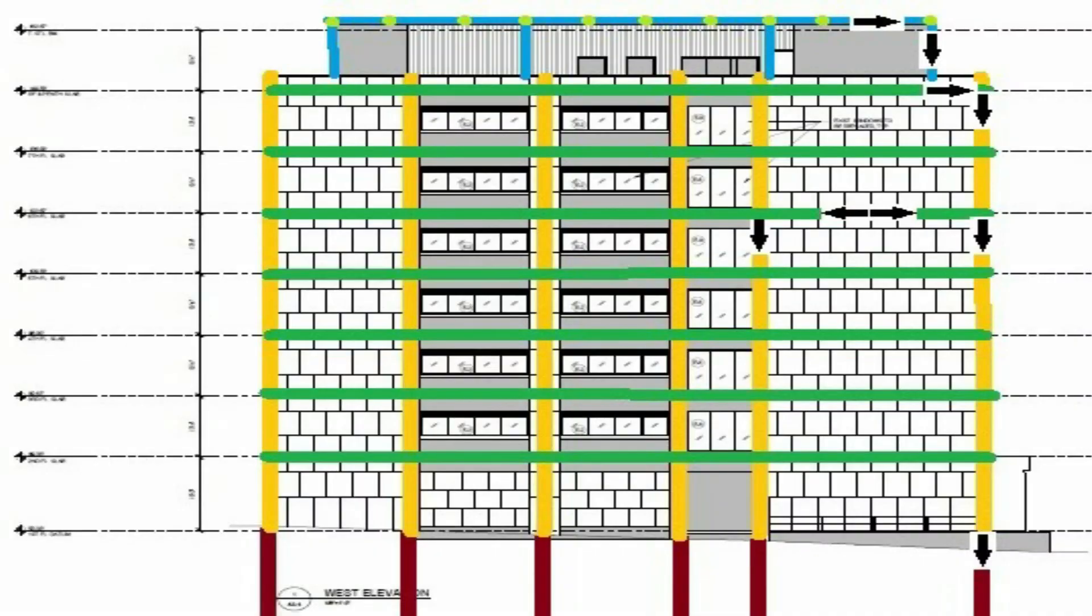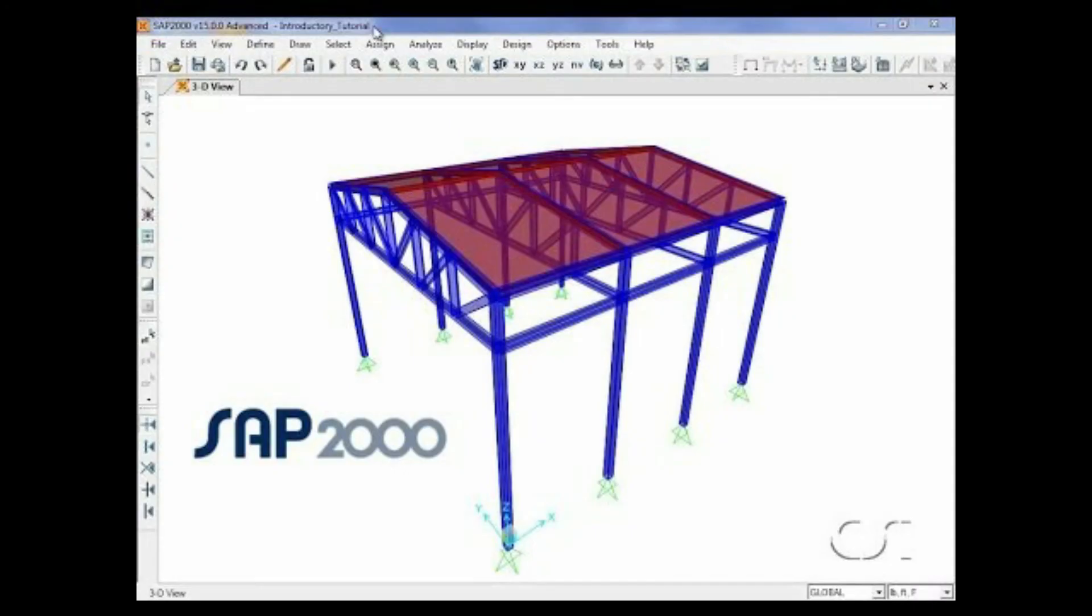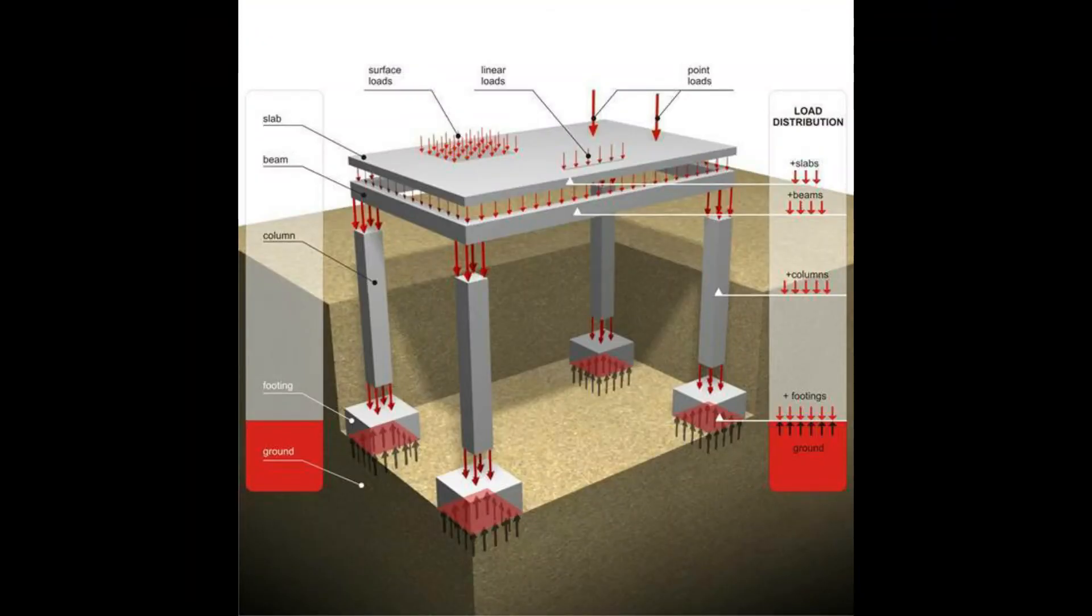That's all about the gravity load path. And then type 2, lateral load path. The lateral load path is the way lateral loads, which are mainly due to wind and earthquakes, are transferred through a building.